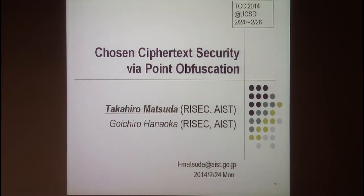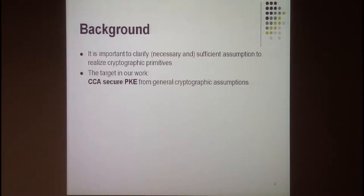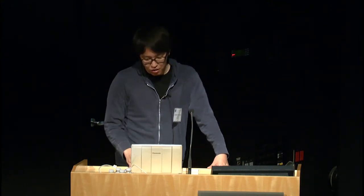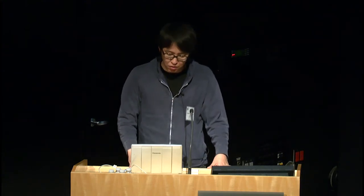This is a joint work with Goichiro Hanaoka. The background of our work is that it is important to clarify the necessary and sufficient assumptions to realize cryptographic primitives, because most cryptographic primitives don't exist unconditionally unless the P≠NP problem is solved. The target in our work is CCA-secure public encryption. CCA security is very important for encryption because it implies security against Bleichenbacher's attack and also implies very strong security notions like non-malleability and universal composability. It is nowadays a default standard security notion.